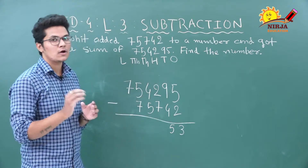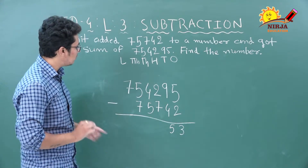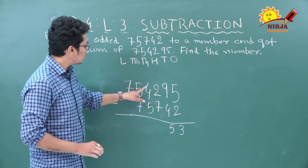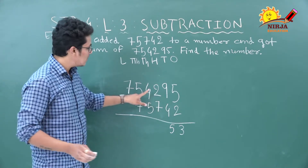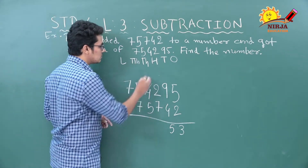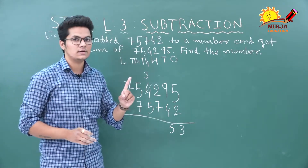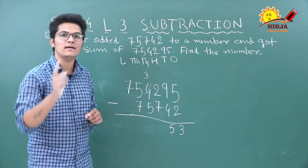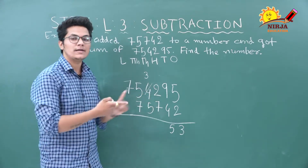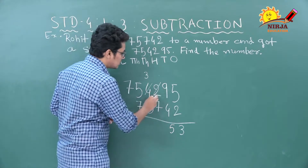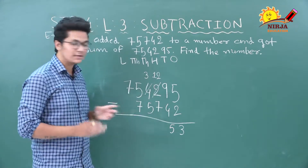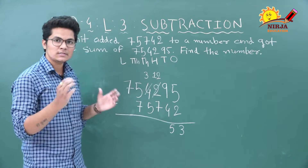One thousand equals 10 hundreds. There are already 2 hundreds, so 10 plus 2 gives us 12 hundreds. Now we can subtract: 12 minus 7 equals 5. Thousands column: 3 minus 5 is not possible, so we borrow 1 ten-thousand from the ten-thousands column. Five ten-thousands minus 1 leaves 4 ten-thousands. One ten-thousand equals 10 thousands, plus the existing 3 thousands gives us 13 thousands. 13 minus 5 equals 8.